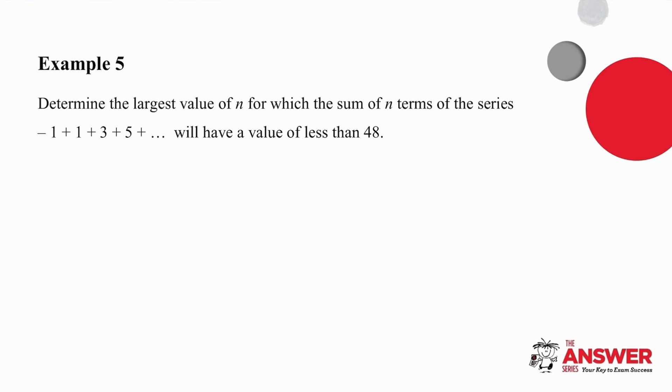In example five, we have to determine the largest value of n for which the sum of n terms of the series, given as minus one plus one plus three plus five, will have a value of less than 48. So in other words, if we add those values together and as many more as we need, how many will we add all together so that they add up to a value less than 48? I want you to pause the video and try the question on your own and then I will go through it with you.